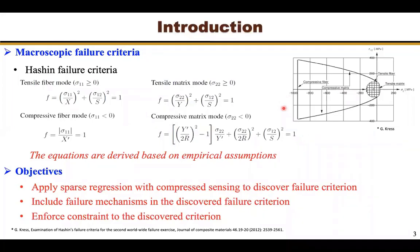Recently, the data-driven approach has attracted many researchers in the mechanics field. We are interested in whether we can apply the data-driven approach to discover failure criterion from experimental data. Currently, the majority of the research focuses on using neural networks to discover the physics laws that govern the data. However, neural networks require a huge amount of training data. Unfortunately, the data size of composite failure data is still small compared to big data. Recently, Professor Bruton employed a framework combining sparse regression with compressed sensing to discover the governing equations of several nonlinear dynamical systems from data.